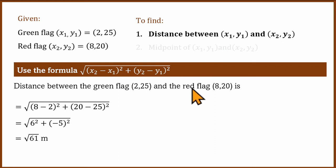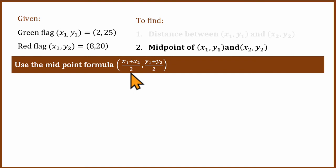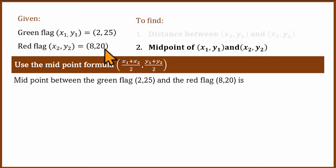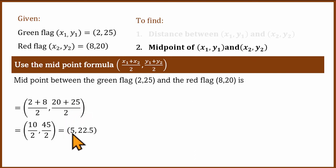For the midpoint, we use the midpoint formula: add the two coordinates and divide by 2. The x-coordinate is (2 + 8)/2 = 5, and the y-coordinate is (25 + 20)/2 = 22.5. So the midpoint is (5, 22.5).